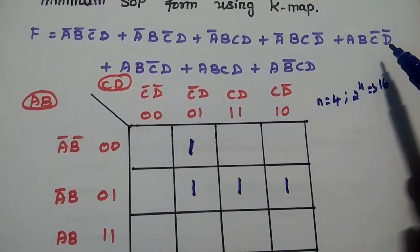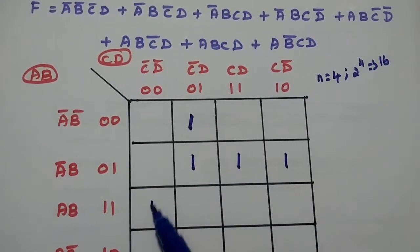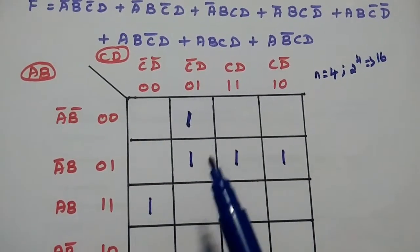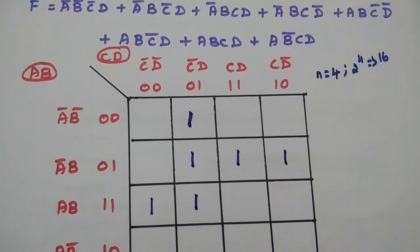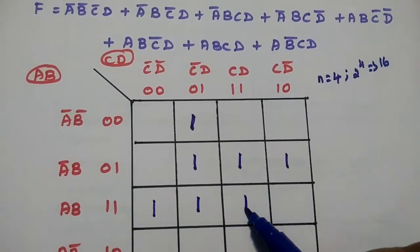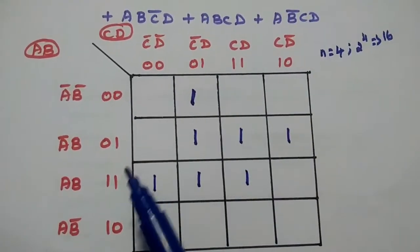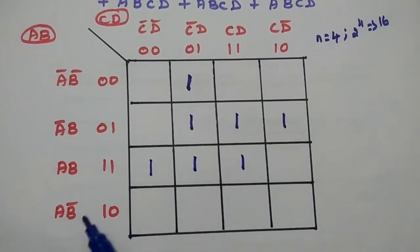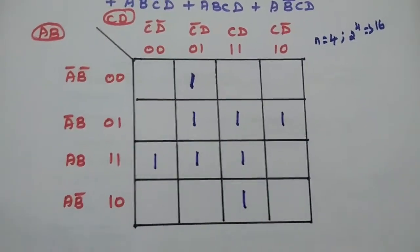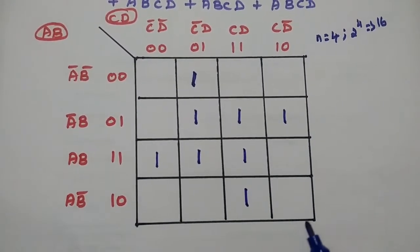Continuing: ABC̄D̄ — AB is the third row, C̄D̄ is the first column — place 1. ABC̄D — AB third row, C̄D second column — place 1. ABCD — AB third row, CD third column — place 1. And the last term AB̄CD — AB̄ is the fourth row, CD is the third column — place 1. We have now placed all the values for each minterm in the KMAP.